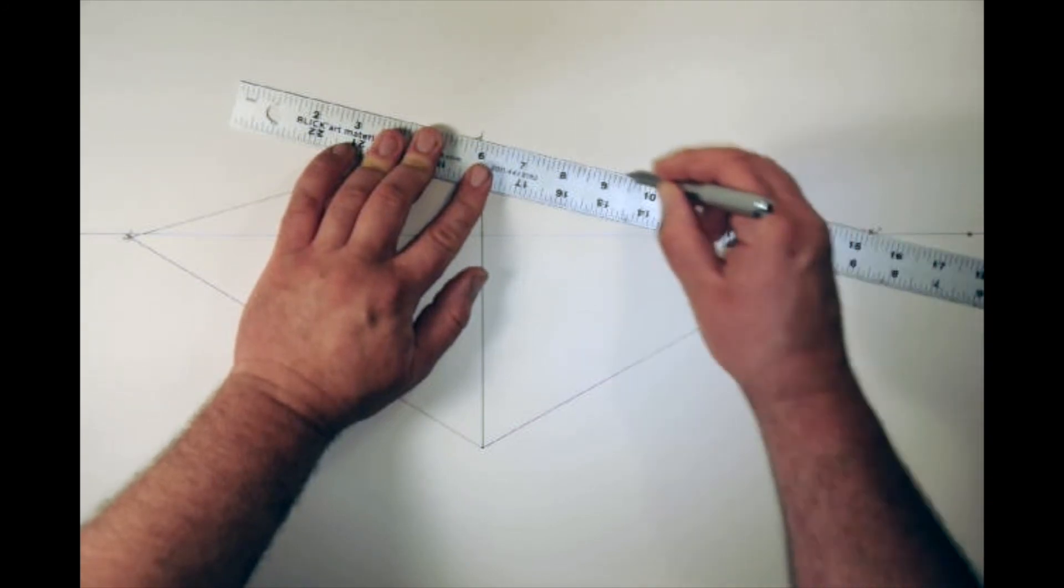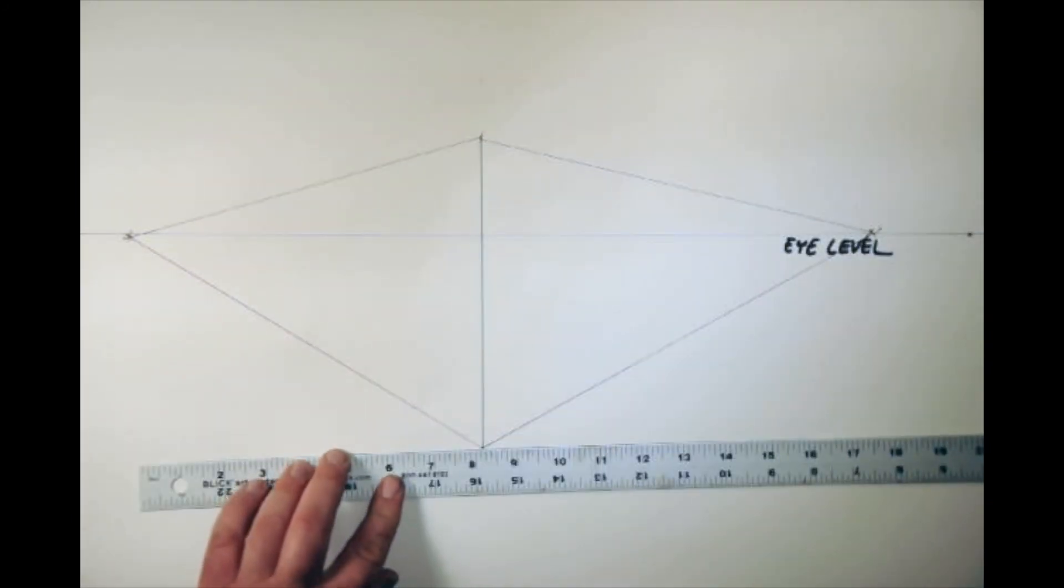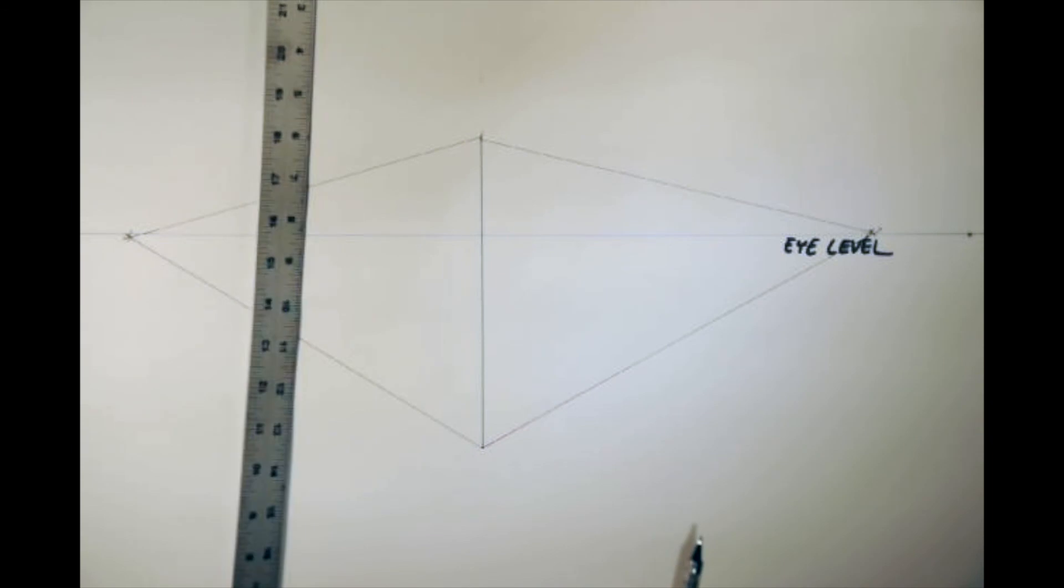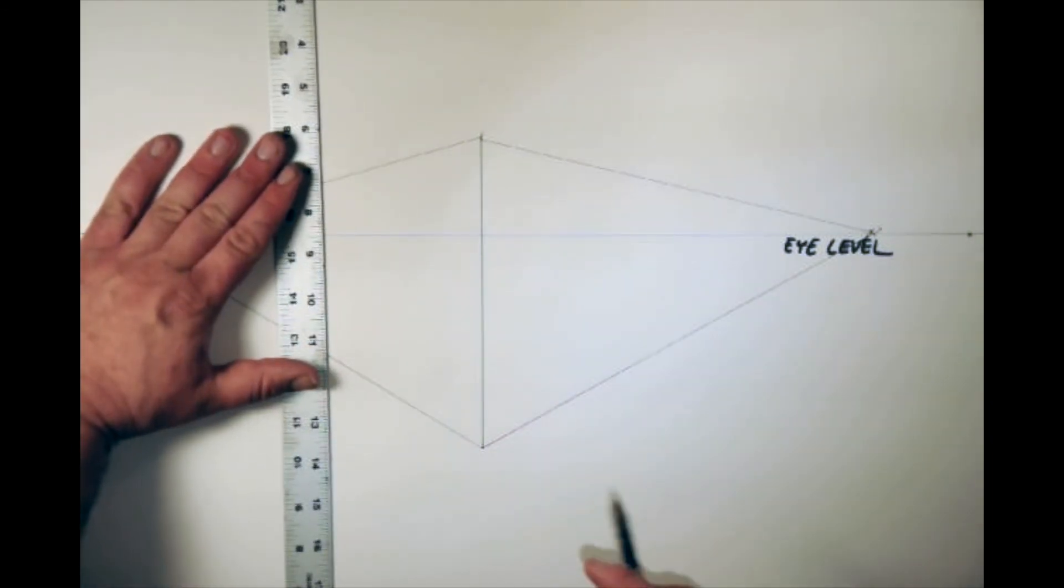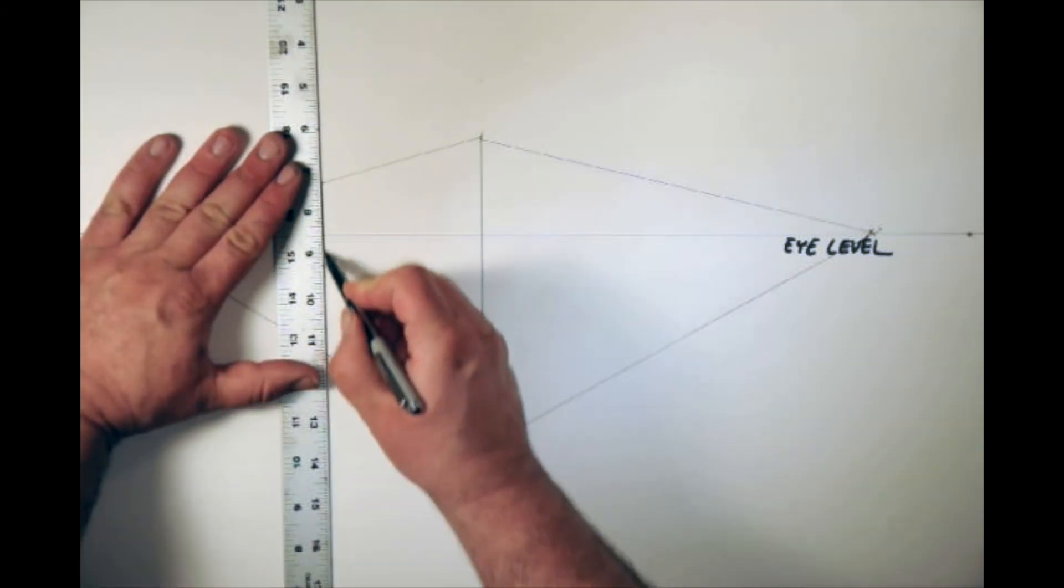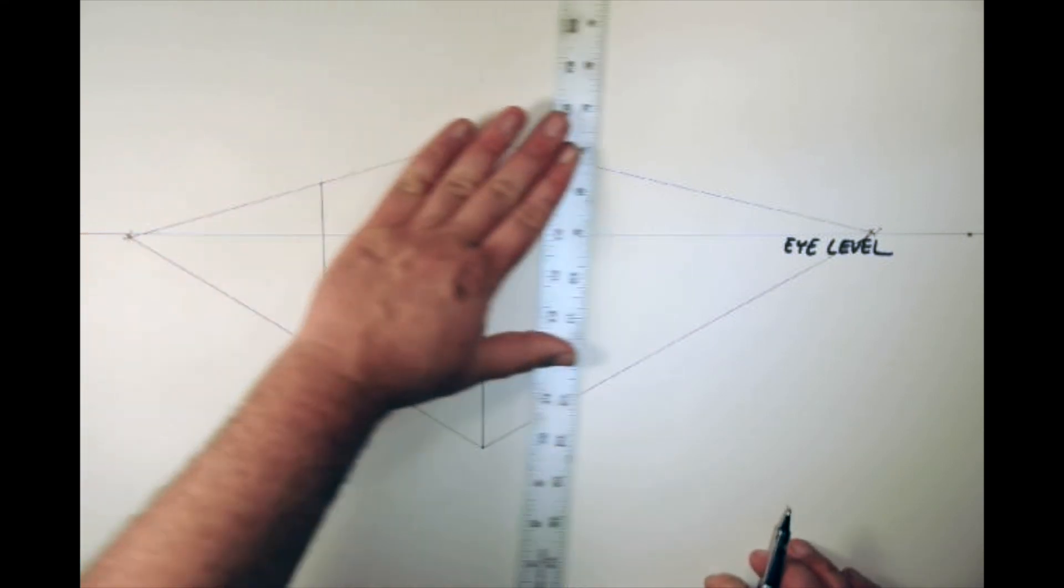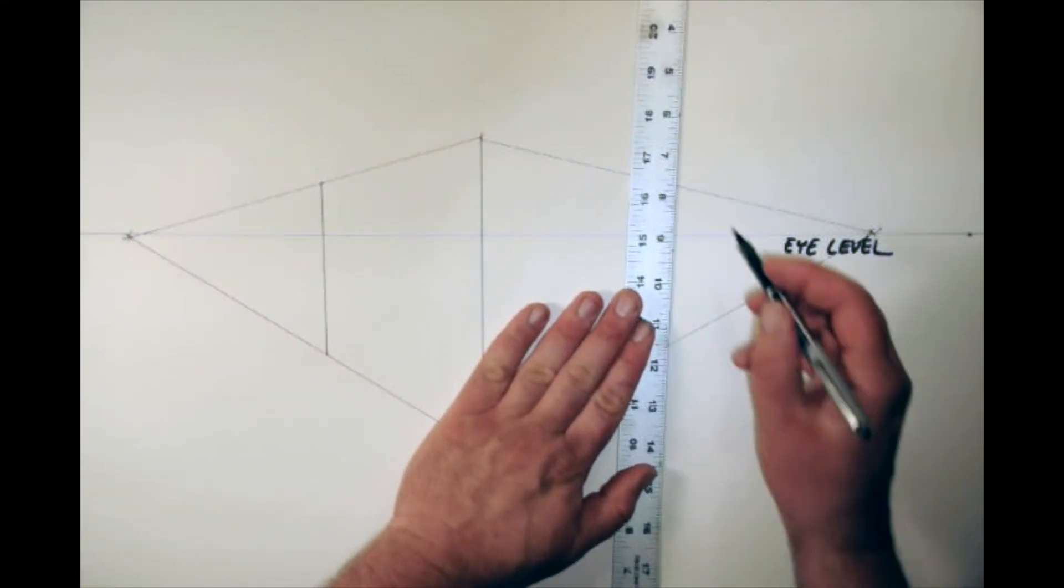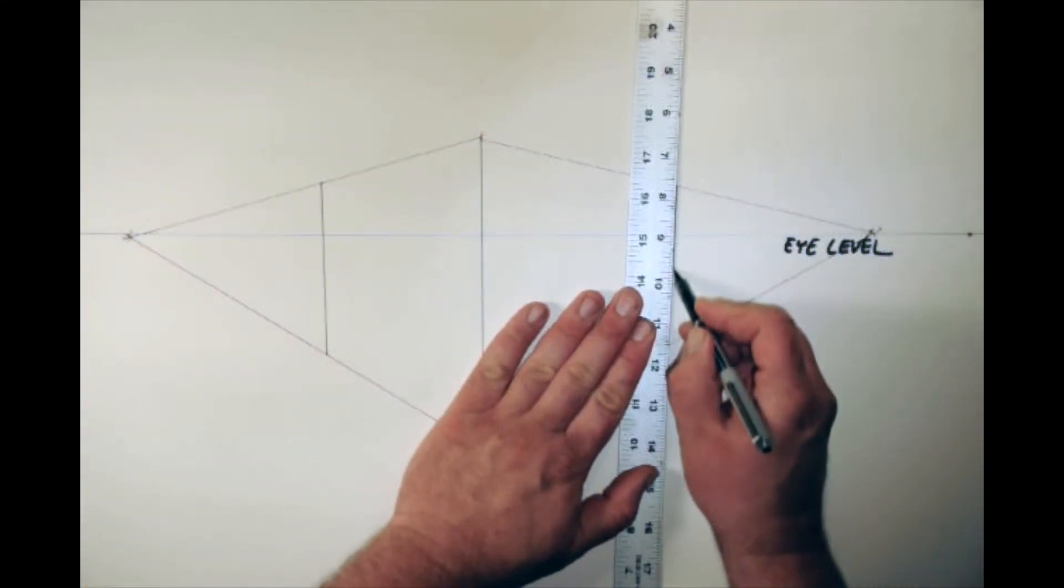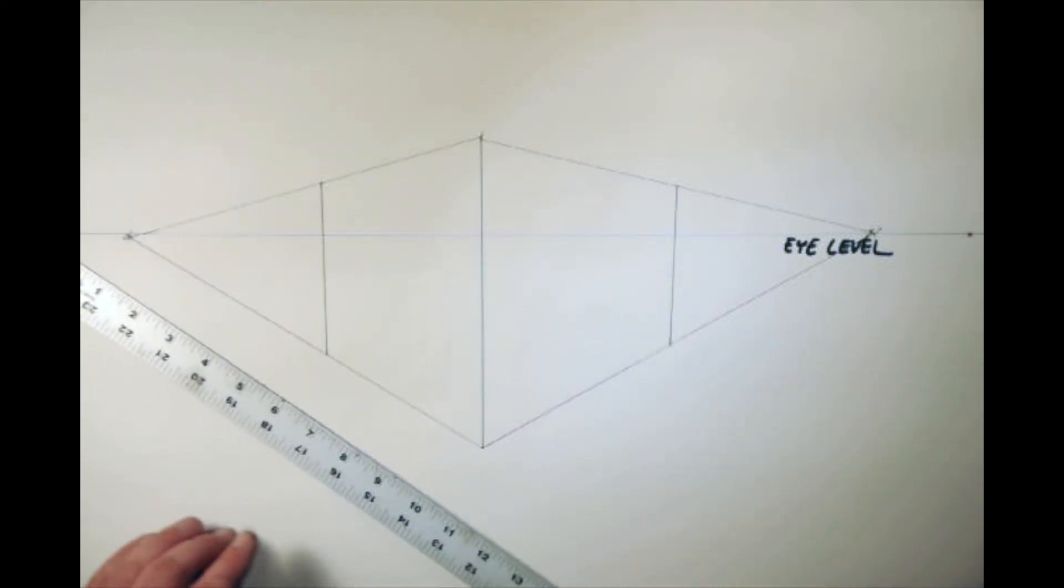And then we've got to figure out where we're going to end this box. I think I'm going to end it here and here. We'll have like a little cube house. Keep it simple.